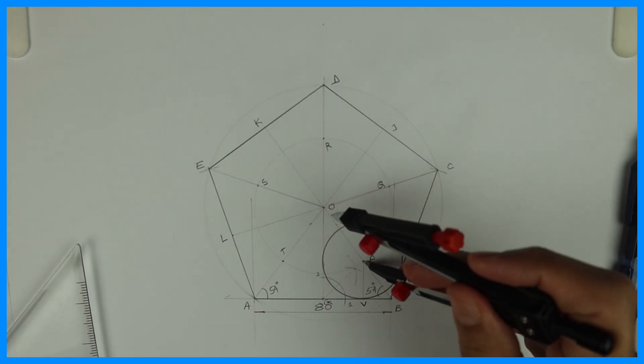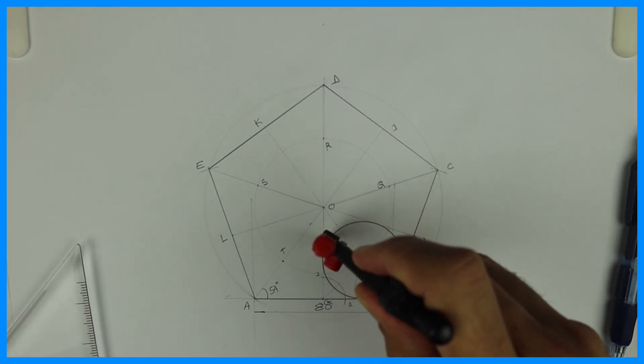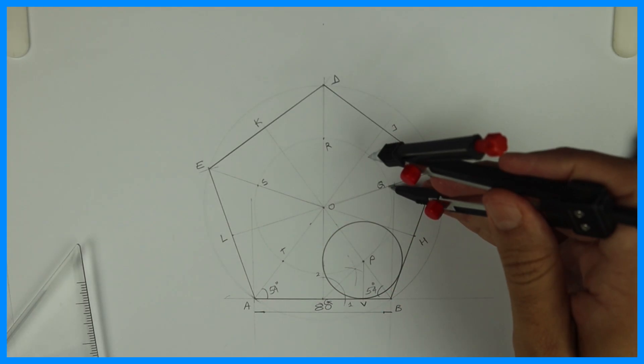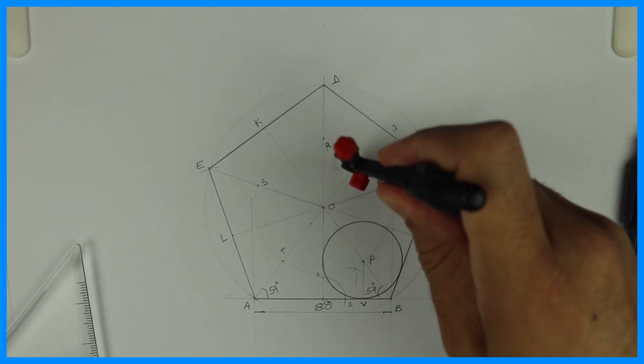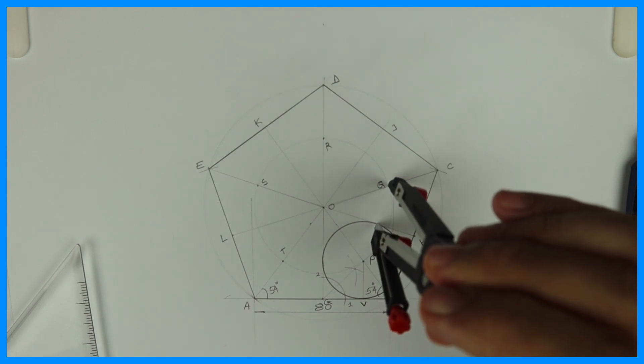So again you take same radius P to V and draw circle from Q, R, S, and T, touching two sides and two other circles. Thank you.